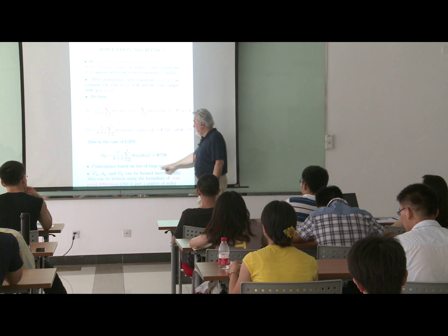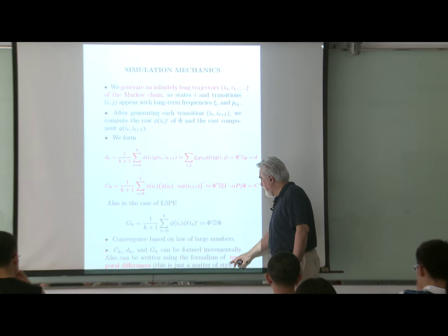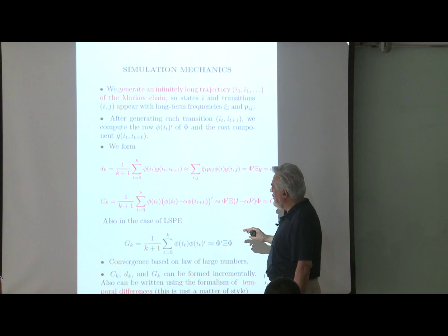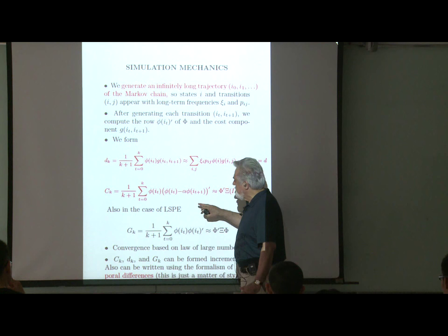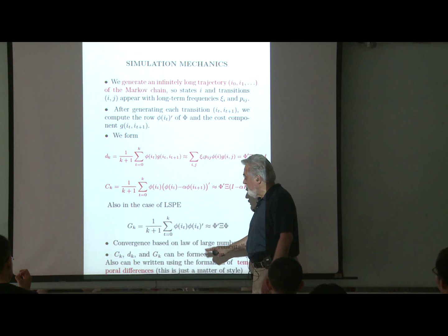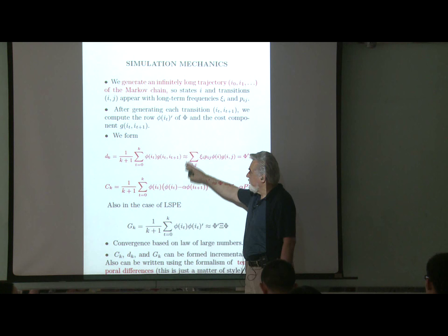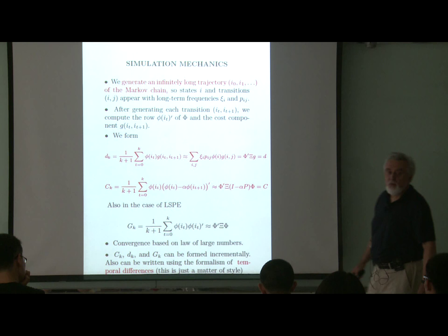Convergence here depends on the law of large numbers and requires an infinite number of samples. There is also a theory around methods sometimes called temporal difference methods. The temporal difference is basically the sum of two specific quantities that appear in the implementation. Because temporal differences appear in all kinds of implementations of this methodology, people view them as an important quantity and call the methods temporal difference methods — though to the lecturer, they are not fundamentally more important than other mathematical quantities.